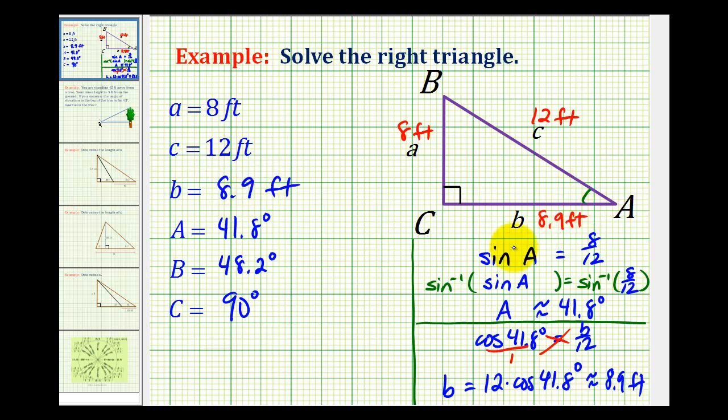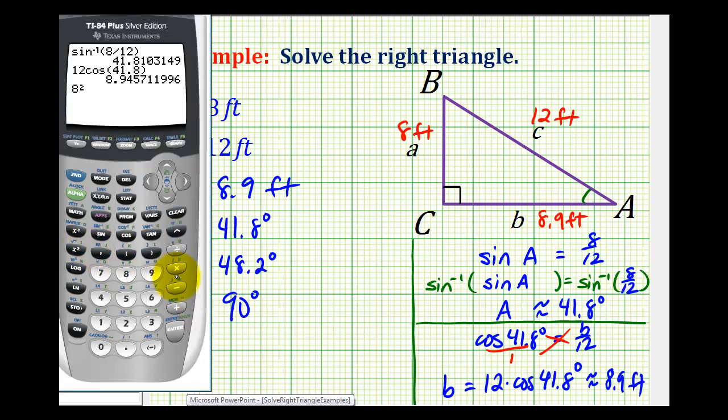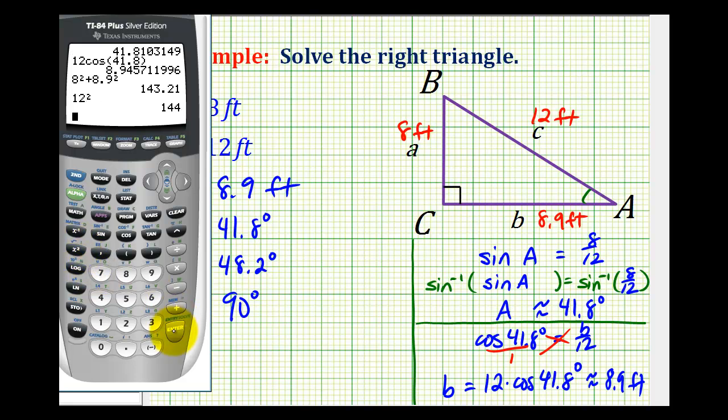Let's go ahead and check this using the Pythagorean Theorem. Eight squared plus 8.9 squared must equal 12 squared. And you can see there's a little bit of an error, but that's because we did round the measure of angle A as well as the length of side b. But it does only take a second to check this to verify that our work is correct.